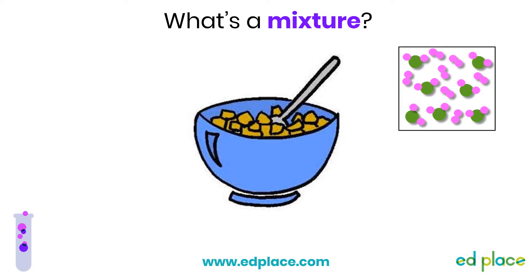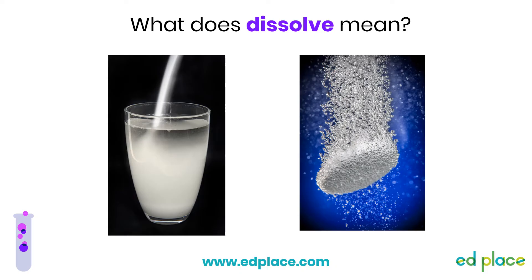It's important to make sure we understand what a mixture is. A mixture is something that has two or more substances mixed together that are not chemically joined or held together by bonds. An example would be your breakfast bowl of cereal and milk. When a solid completely breaks up and mixes in with another substance, often a liquid, we say it has dissolved. For example, if you were to mix sugar with water, you would find that the sugar looks like it has disappeared. We would then say the sugar has dissolved.